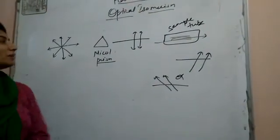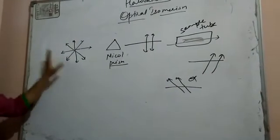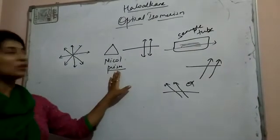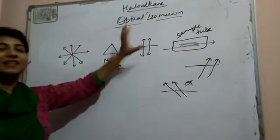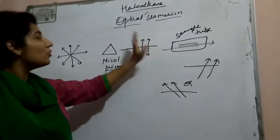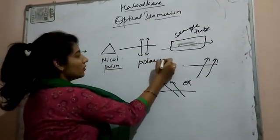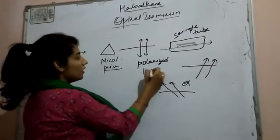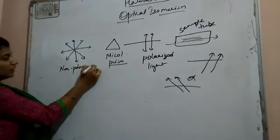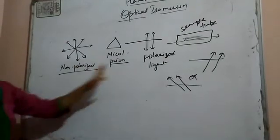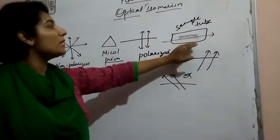So this is the whole procedure: we take the light of sodium source, which rotates in each plane. We then pass it through a Nicol Prism. After passing through the Nicol Prism, the light will only vibrate, rotate, or oscillate in one plane. This light is called Polarized Light; before that it is Non-Polarized. After passing through the Nicol Prism it becomes Polarized Light, which then passes through the sample tube.